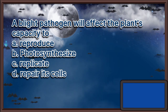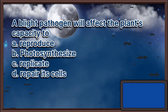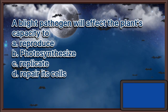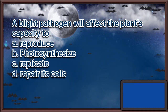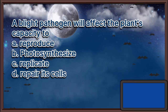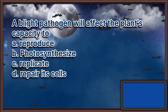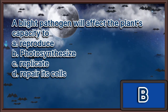A blight pathogen will affect the plant's capacity to: A. Reproduce, B. Photosynthesize, C. Replicate, D. Repair its cells. The answer is letter B.